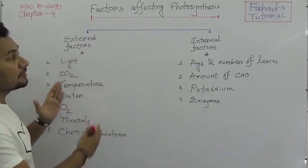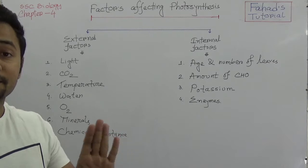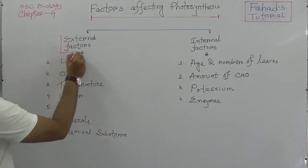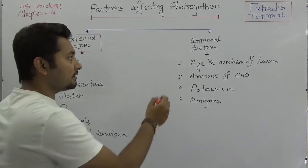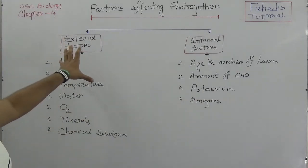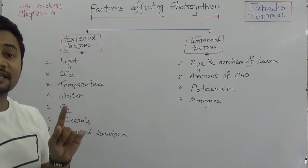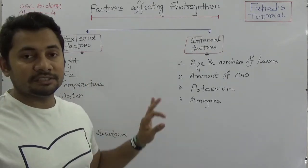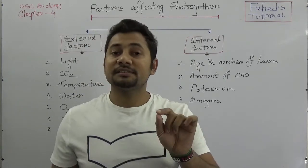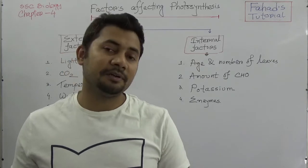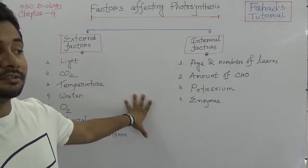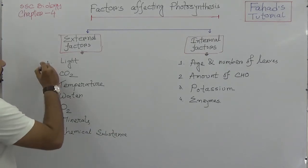We need to understand what factors affect photosynthesis directly or indirectly. Based on these two categories, there are external factors and internal factors affecting photosynthesis. This tutorial is especially useful for students studying A-level biology or O-level biology, as there are MCQ questions available in your question papers covering these factors.